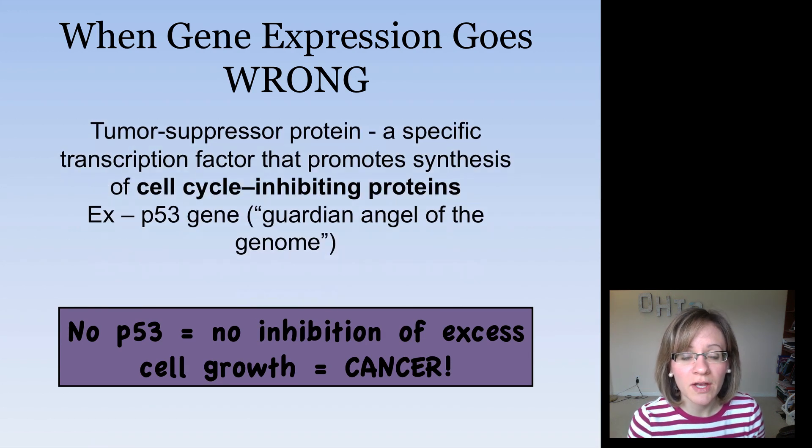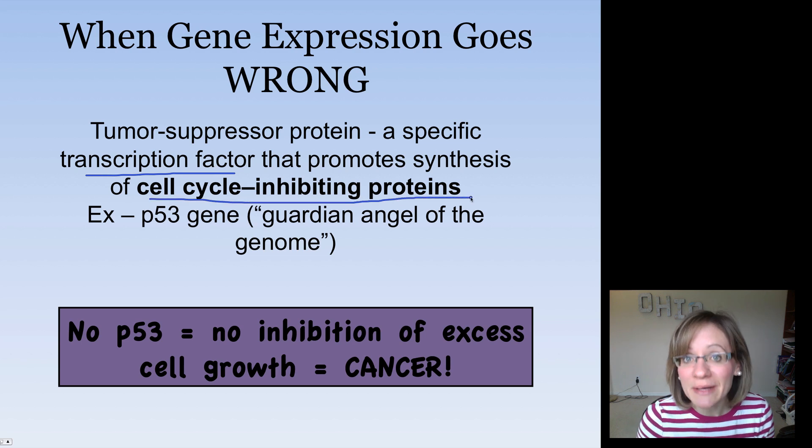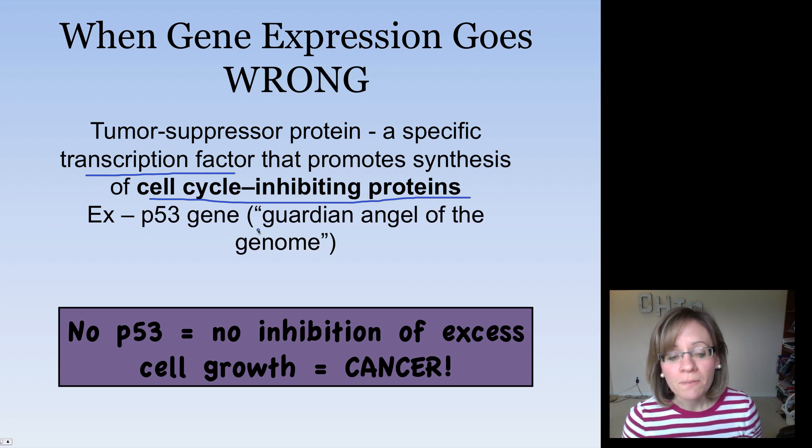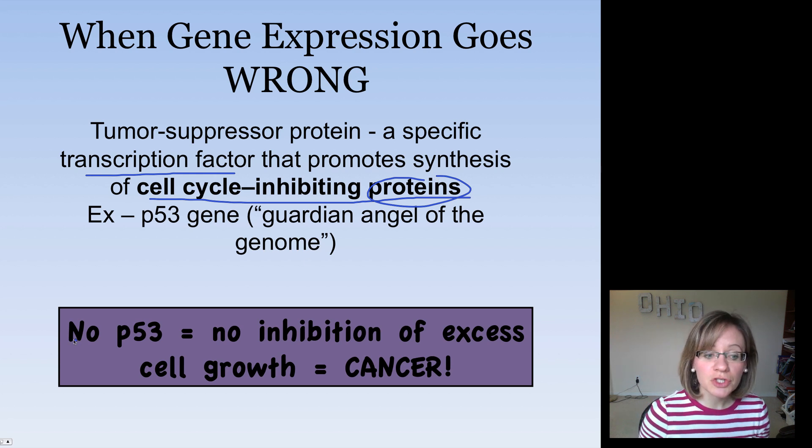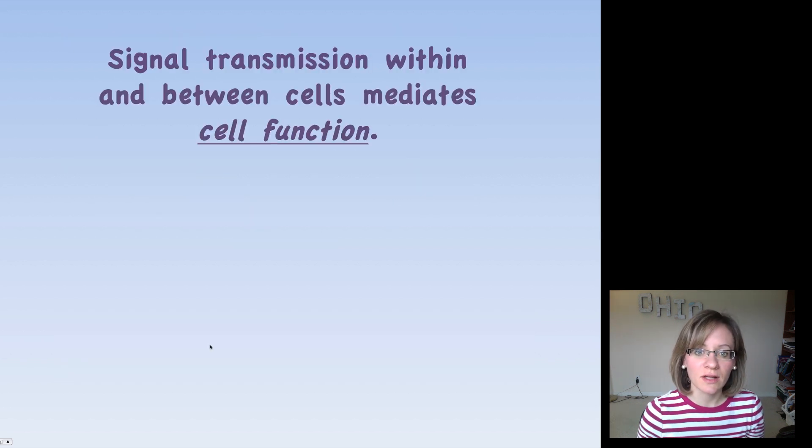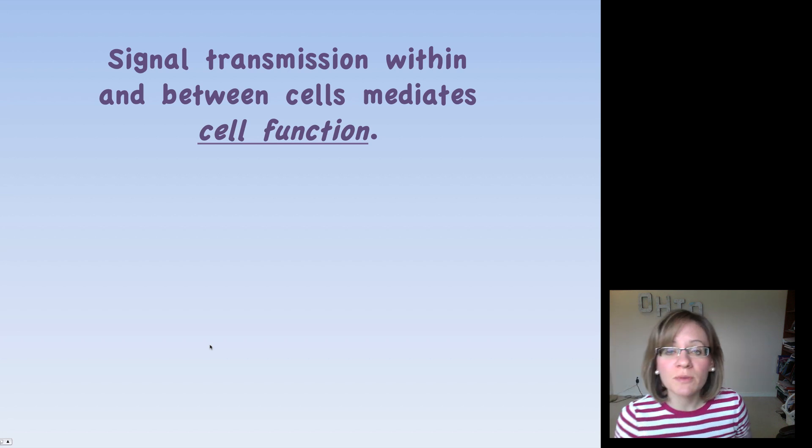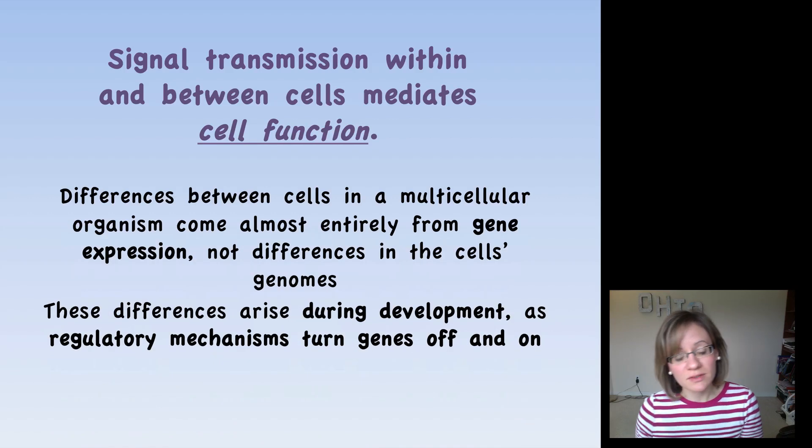There's another cancer regulator called a tumor suppressor protein. So this is a specific transcription factor that promotes synthesis of cell cycle-inhibiting proteins. The best example is the P53 gene. It's called the guardian angel of the genome. So when there is P53, it recognizes when there's a mutation, and so it sends out these proteins to inhibit the cell cycle. Stop making cells because something has gone wrong. So you can imagine when there's no P53, there's no inhibition of this excess growth, and so cancer can develop. So signal transmission is going to be very important in gene expression. It's also going to be very important in mediating cell function.